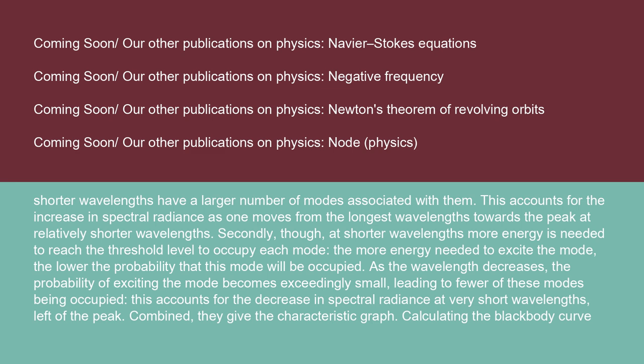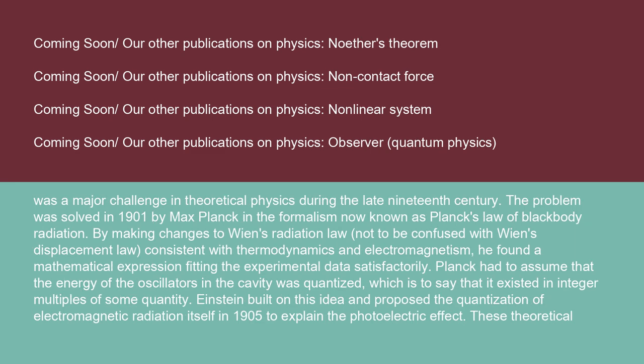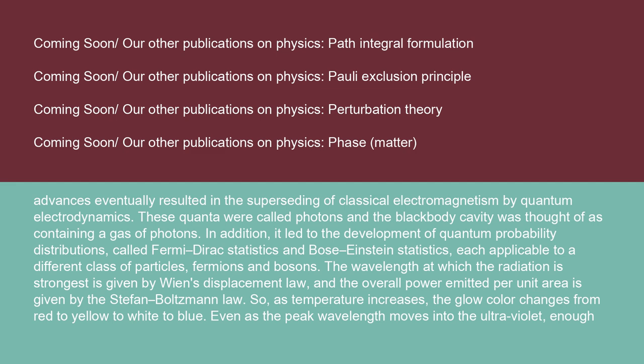Calculating the blackbody curve was a major challenge in theoretical physics during the late 19th century. The problem was solved in 1901 by Max Planck, now known as Planck's Law of Blackbody Radiation. By making changes to Wien's Radiation Law — not to be confused with Wien's Displacement Law — consistent with thermodynamics and electromagnetism, he found a mathematical expression fitting the experimental data. Planck had to assume that the energy of the oscillators in the cavity was quantized, existing in integer multiples of some quantity. Einstein built on this idea and proposed the quantization of electromagnetic radiation itself in 1905 to explain the photoelectric effect. These theoretical advances eventually resulted in the superseding of classical electromagnetism by quantum electrodynamics.